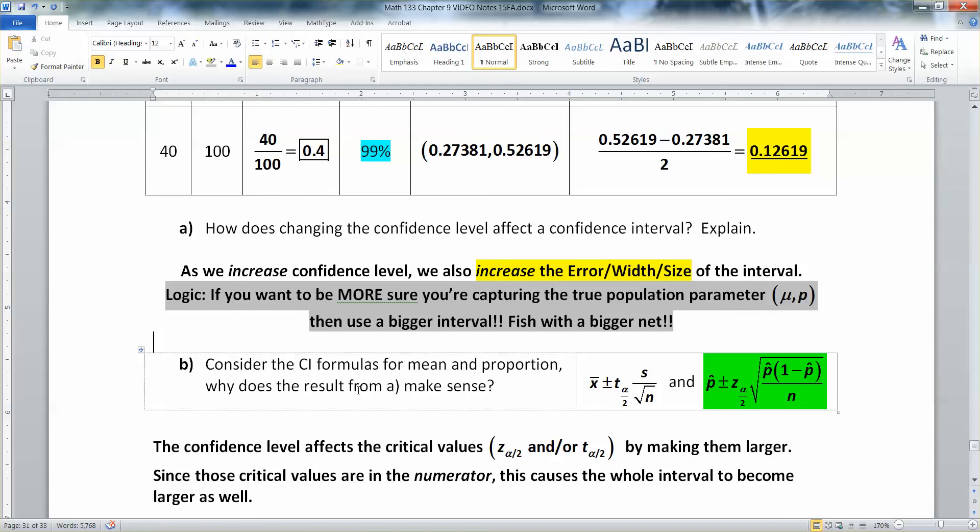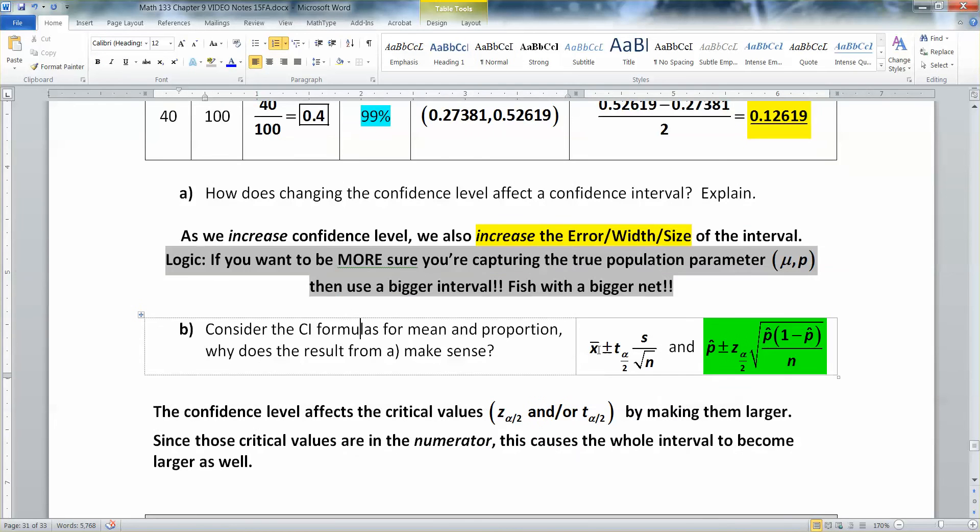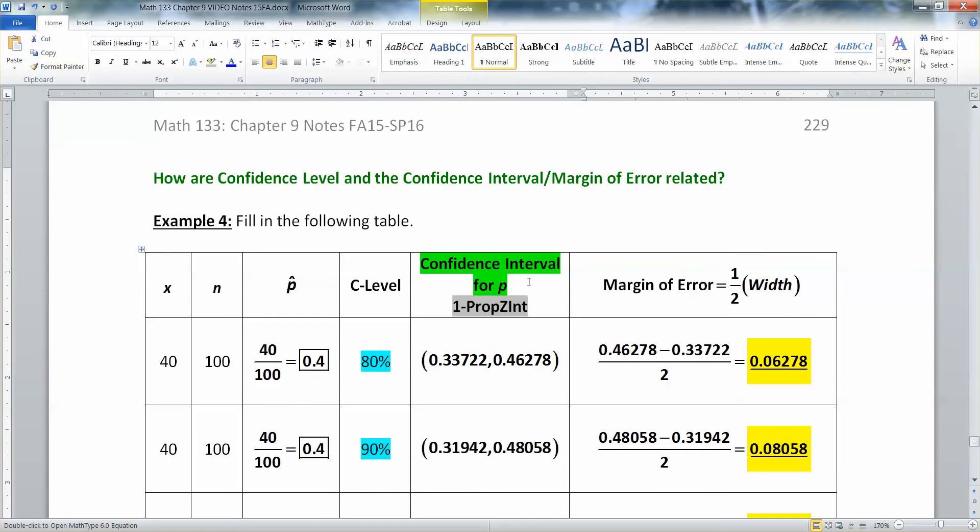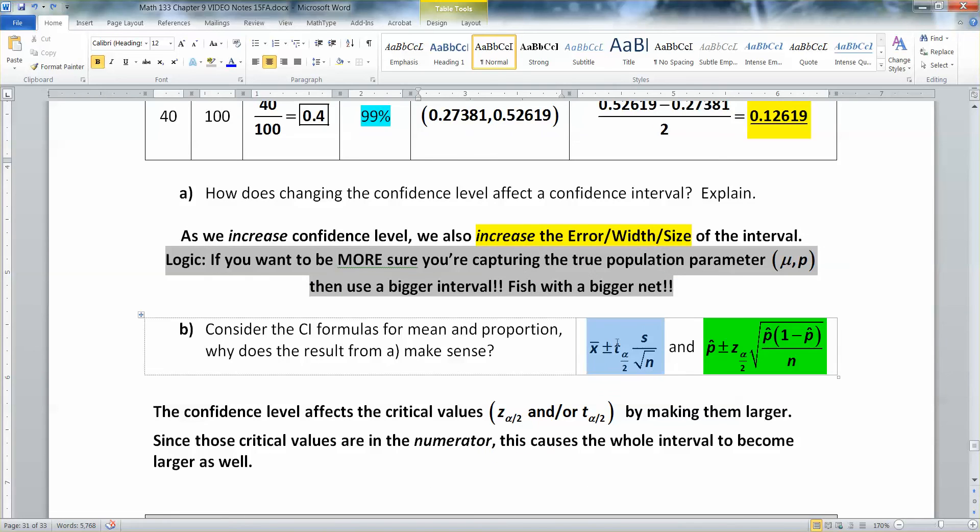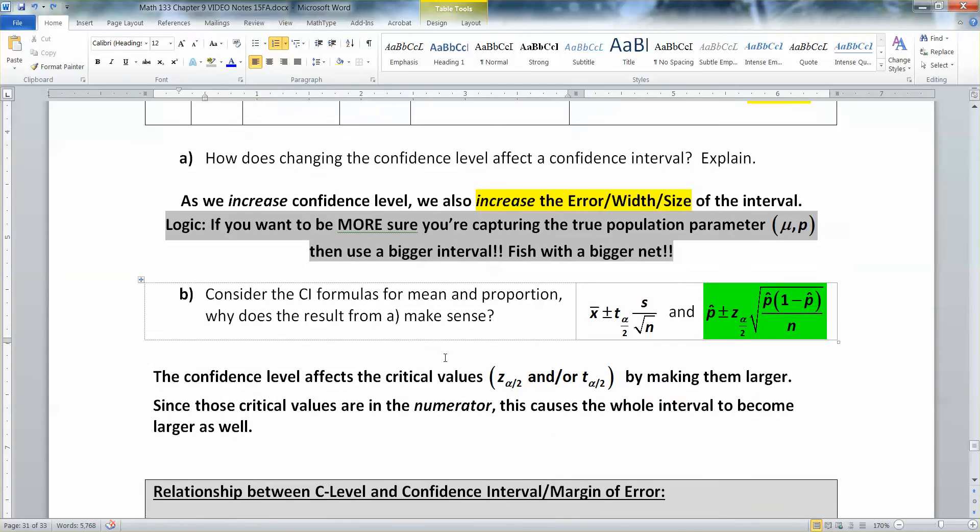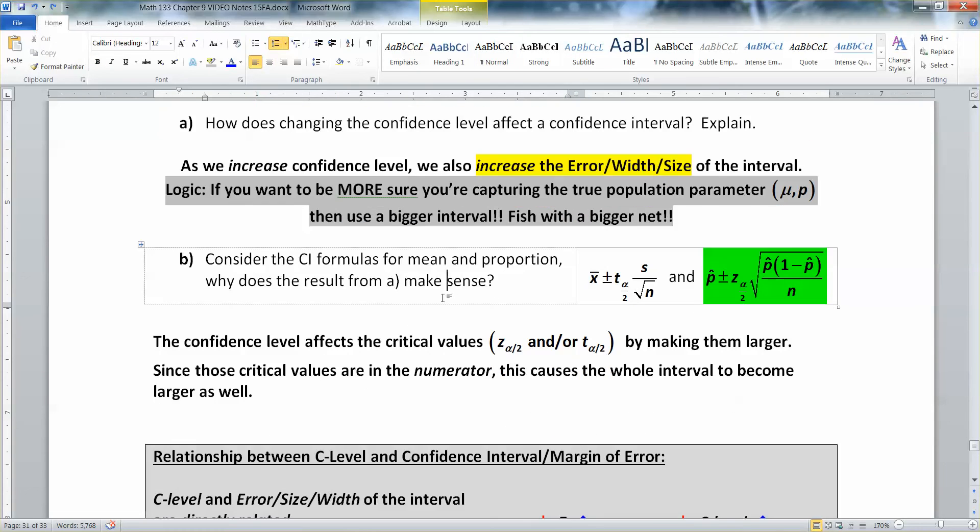Now, why is this happening? Well, it's happening because if you look at the formulas here, and we're using the one for proportions right here. I just threw in real quickly for you, this is the one prop z int is the interval we were using here. If you're using it for the interval for proportions, it's the same as it would have been for means. I just didn't want to make you do it twice. But look what's happening. When you change your confidence level, what you're doing is affecting your z score.